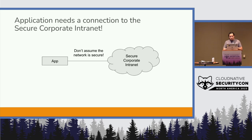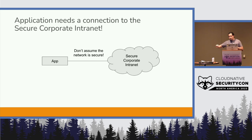When you start looking at applications, what all this is leading towards is that you're not assuming the network is secure. You're taking the control and bringing it closer to the application. There's some debate as to whether the application itself should own the control, or whether you should have something wrapped around it — like Envoy or something similar. But in both cases, you're bringing the control closer to the application, to the point where you have the context of what the application is trying to do.